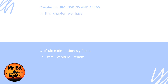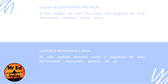Chapter 6: Dimensions and areas. In this chapter, we have the charts and diagrams for area, dimensions, stations, access doors, zoning, and physical locations.